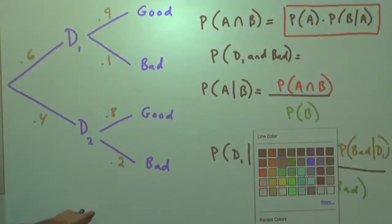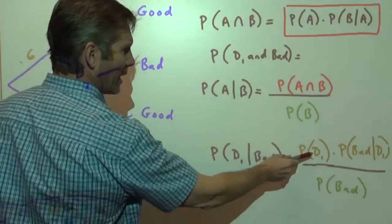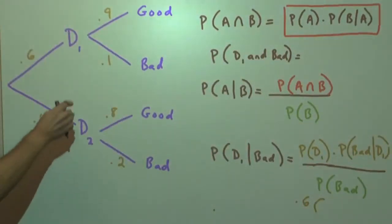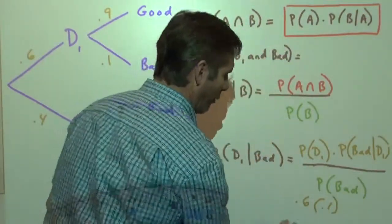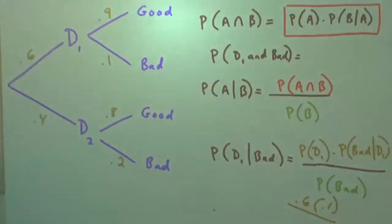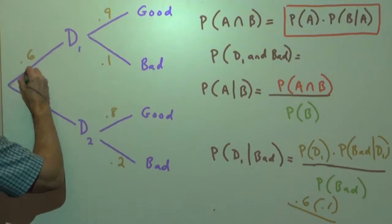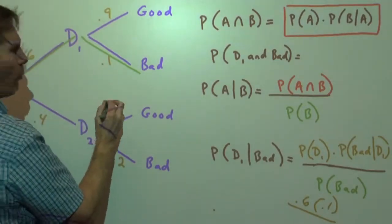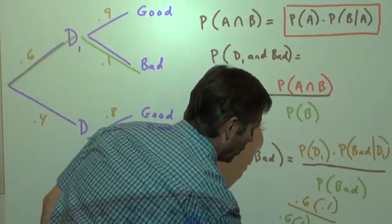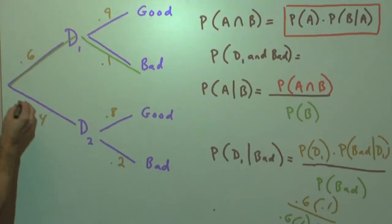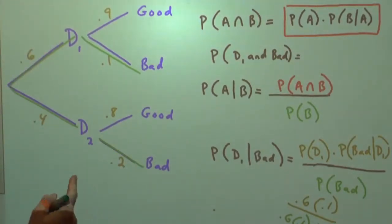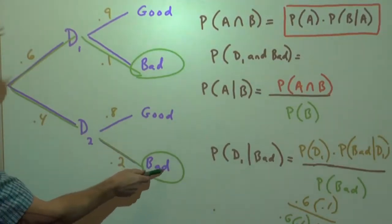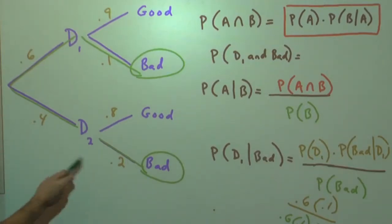Following the formula, we take the probability it came from Dairy 1 — that's 0.6 — and multiply by the probability it was bad coming from that dairy, which is 0.1. So we get 0.6 times 0.1 in the numerator. Now bad milk can happen in two places. AND means multiply because we're dealing with two things, so 0.6 times 0.1 gives us the first part. Then OR — the other way to get bad milk is from Dairy 2, where it went bad. OR means add, so we add that outcome too.